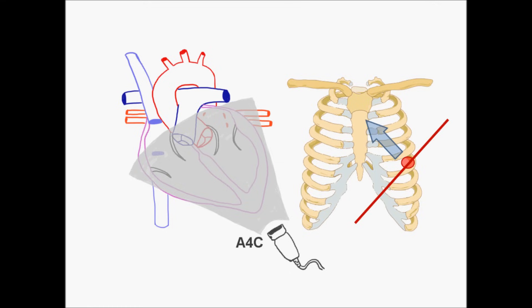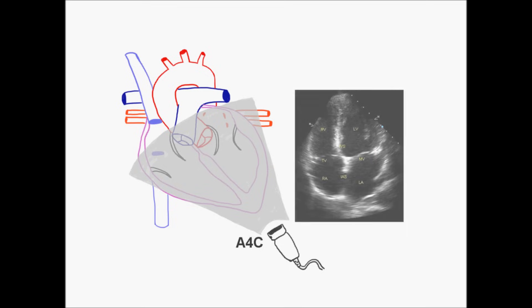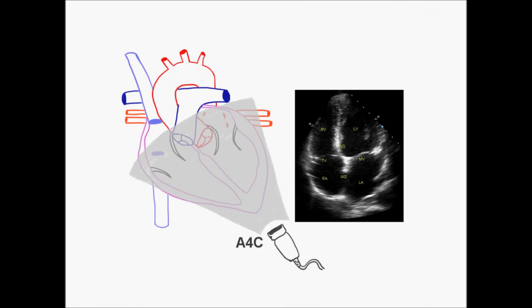Some tips for obtaining a good apical four-chamber view: have the patient lie in the left lateral position at least 30 to 40 degrees, and once we obtain the view, rotate the probe to widen the ventricle as much as possible while it's in view. This gives us a view displaying the right atrium, the left atrium, the right ventricle, and the left ventricle.